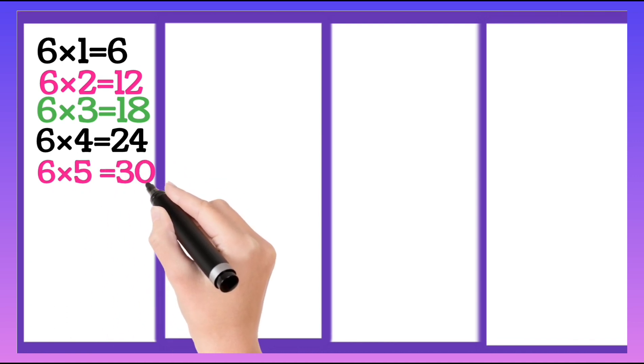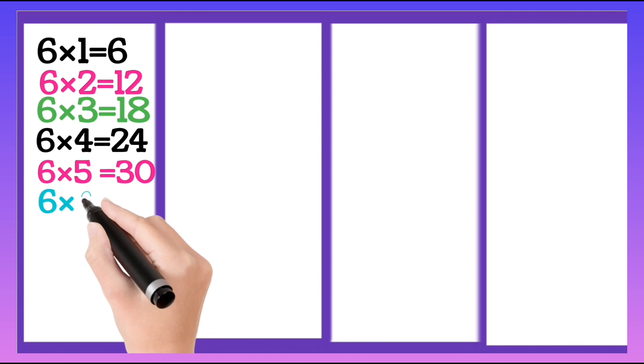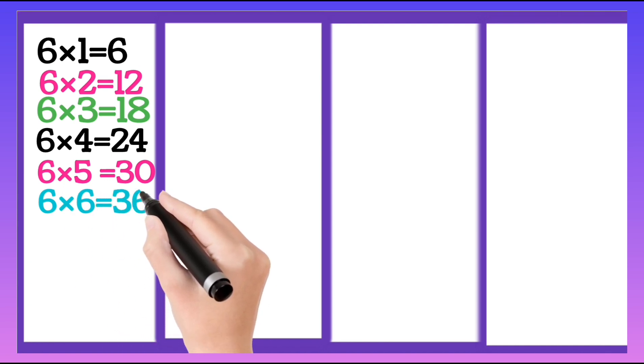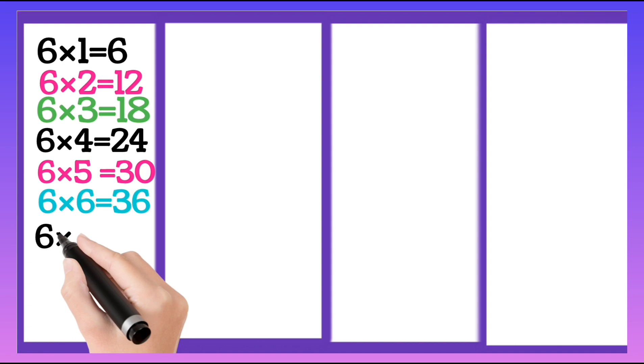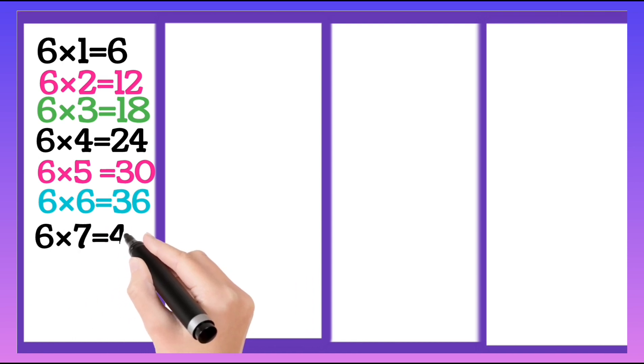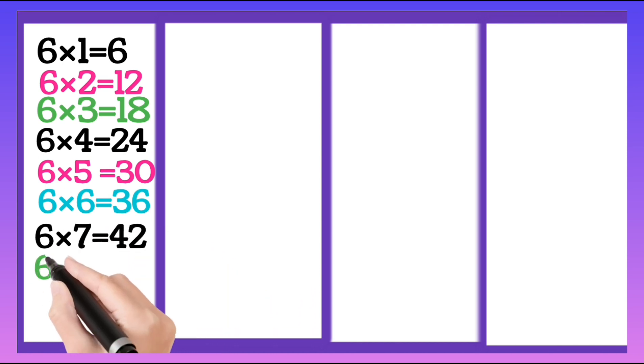6 fives are 30, 6 sixes are 36, 6 sevens are 42.